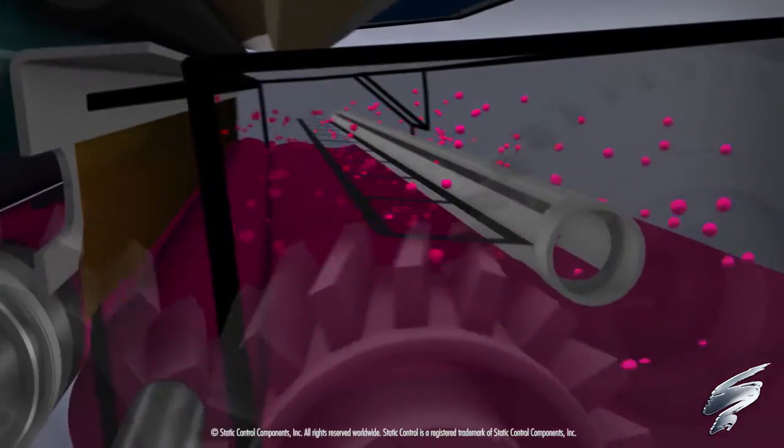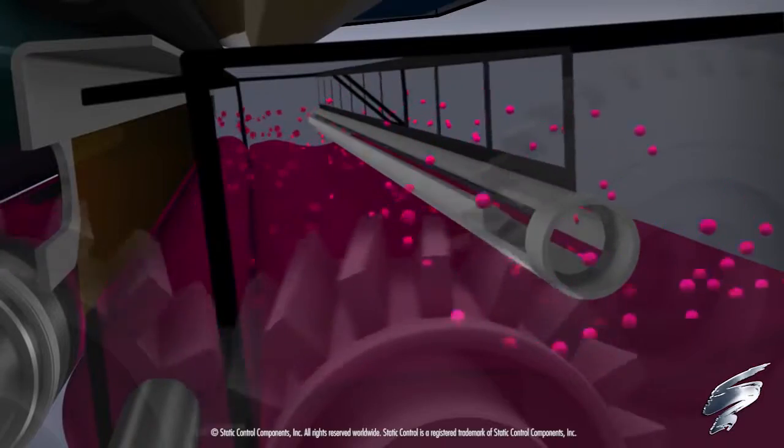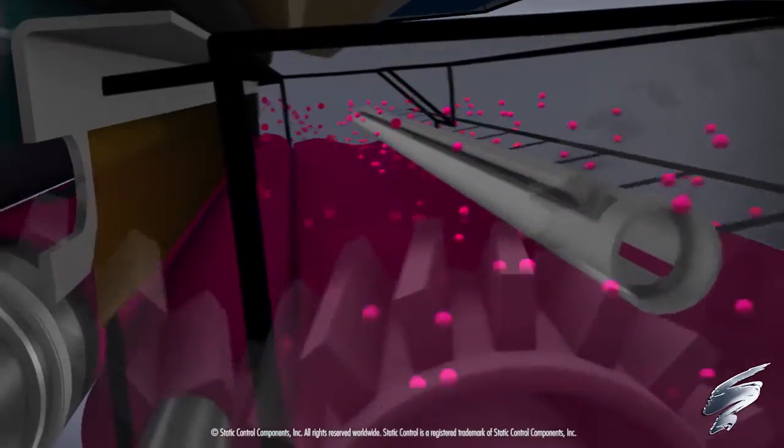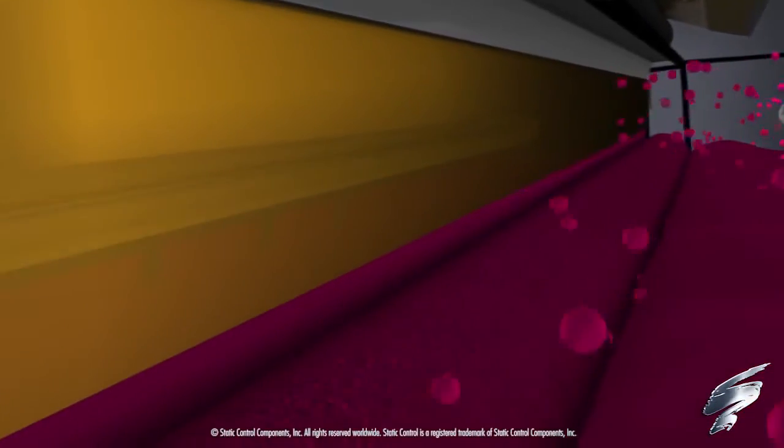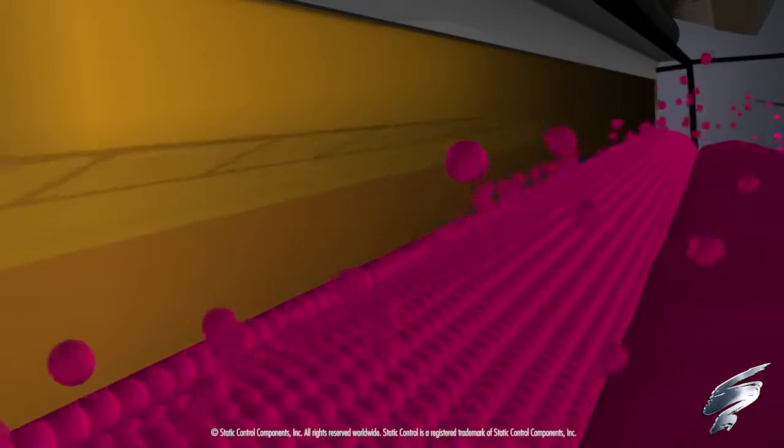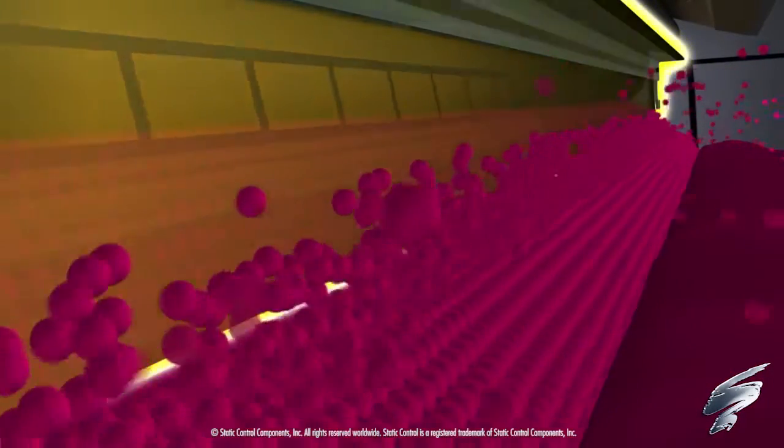Toner is stirred in the hopper. The toner adder roller collects the toner, moving it to the surface of the developer roller. The doctor blade then levels it to the precise height.